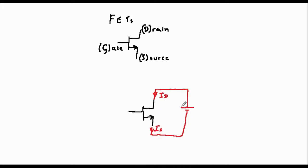In other words, the gate fulfills the same function as the base on the BJT. The drain is like the collector and the source is rather like the emitter.